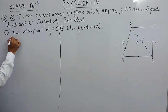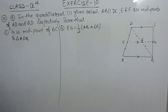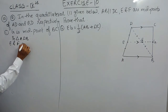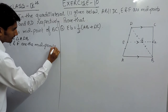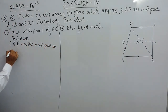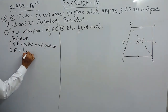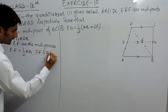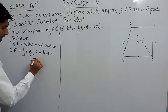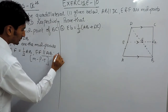Now let's write it down formally. In triangle ADB, E and F are the midpoints of AD and DB respectively. So if we join EF, then EF must be equal to half of AB and EF must be parallel to AB. This is by the midpoint theorem, and this is our first equation.